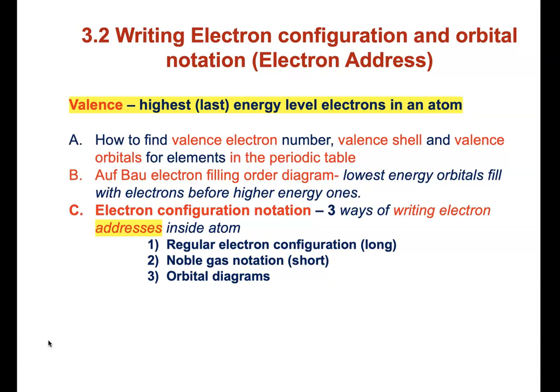Second, we will look at the order in which electrons fill from lowest to highest energy using the Aufbau electron filling order diagram. And finally, we will learn how to write electron addresses or configurations in three different ways. First is the regular electron configuration and then the noble gas notation. The former is longer than the latter. And then orbital diagrams where you show electron orbitals as boxes and electrons as arrows.